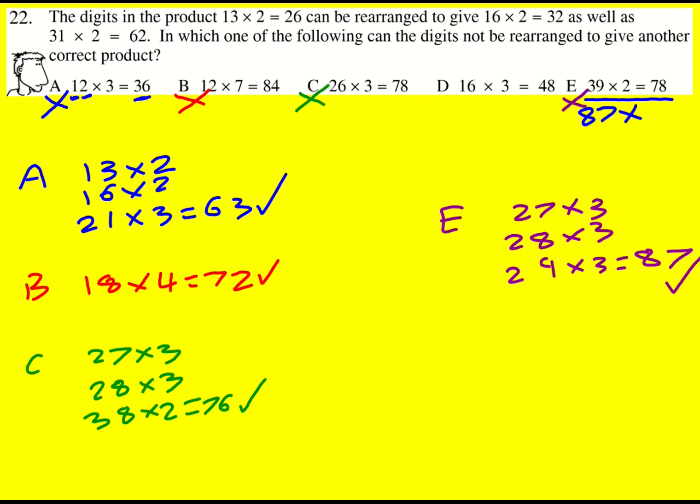So A, B, C, and E are possible. It's going to take a bit of time potentially to get them, which means D, however much you try, you cannot rearrange the digits to make another correct product.